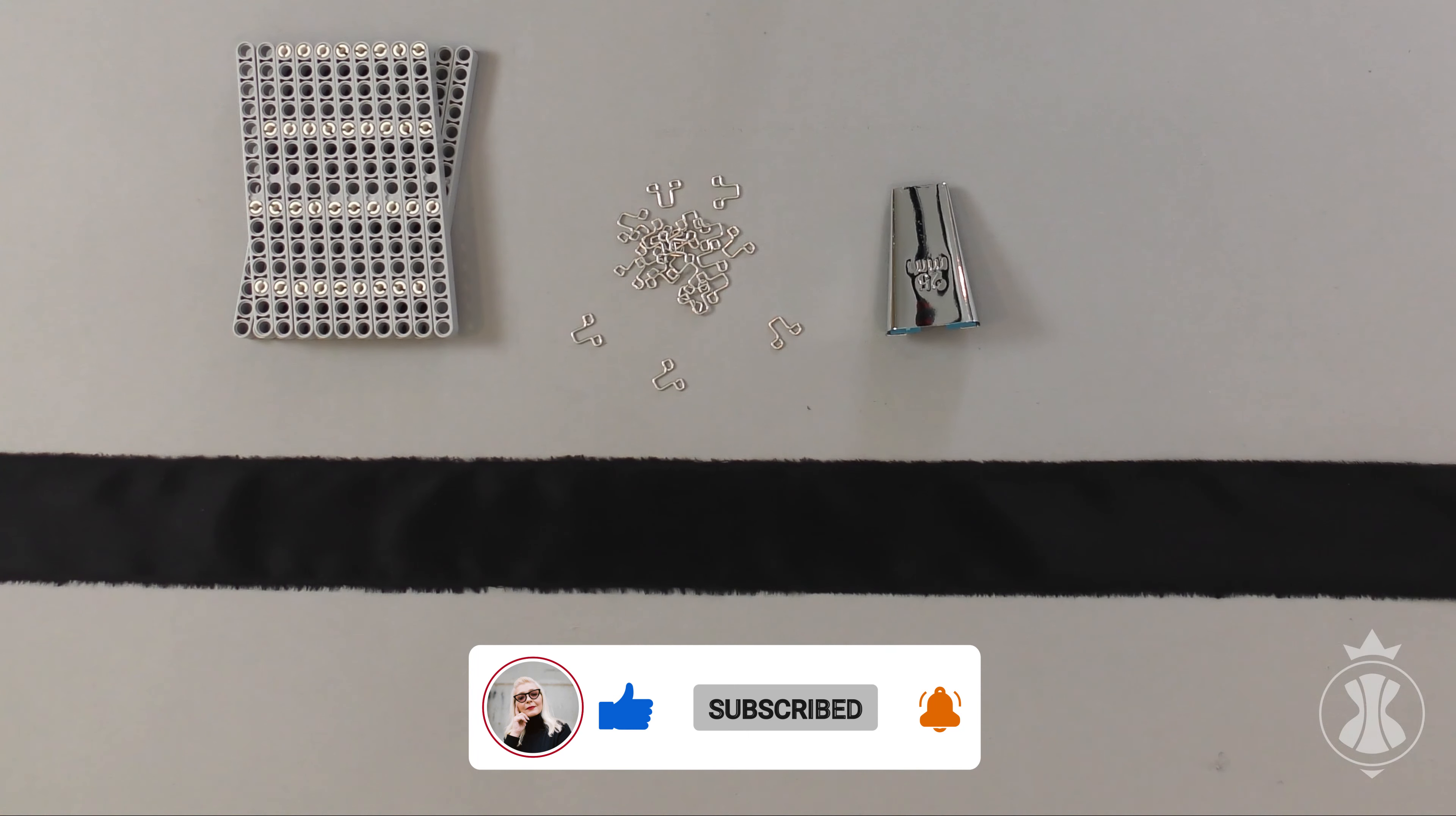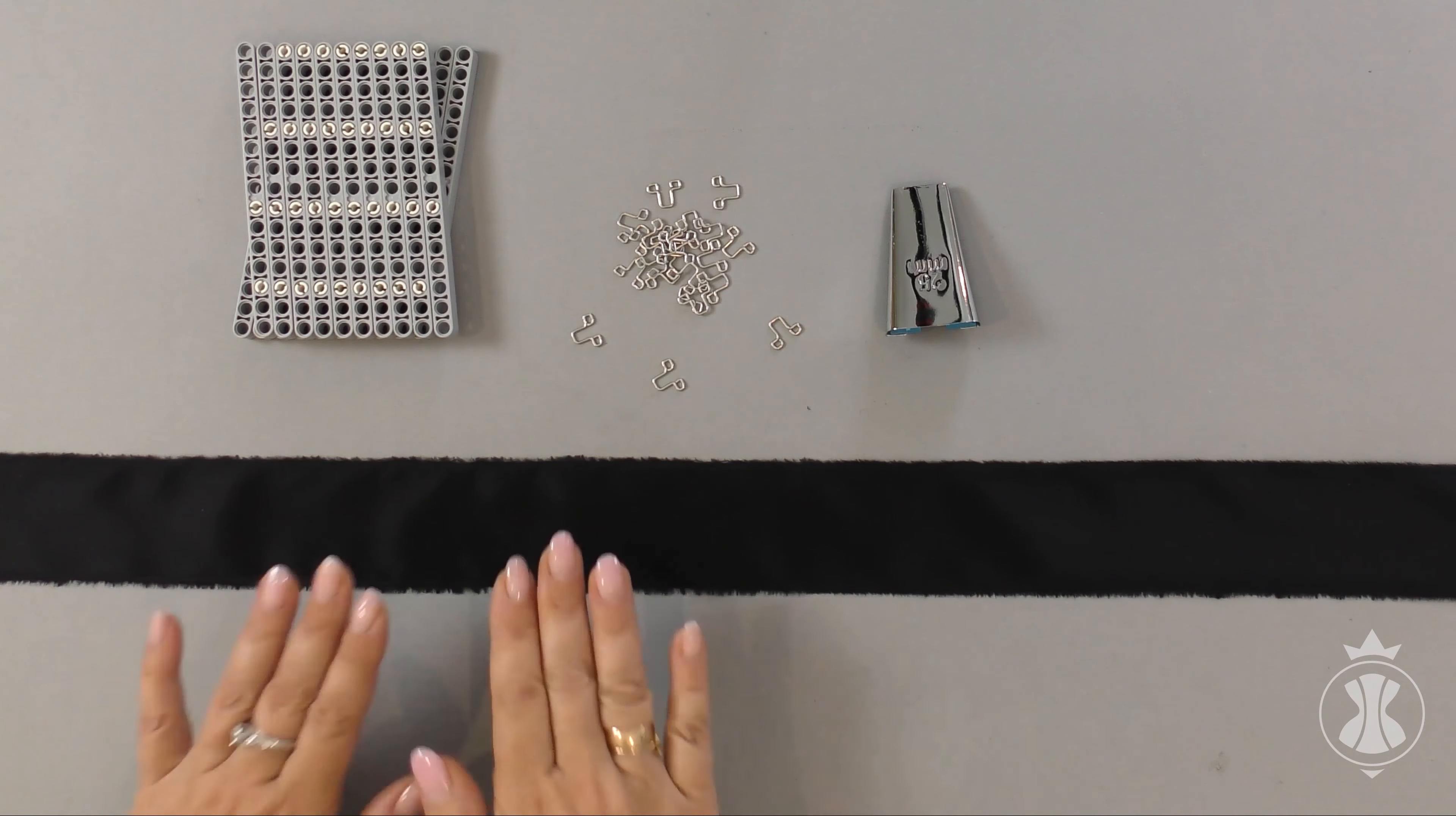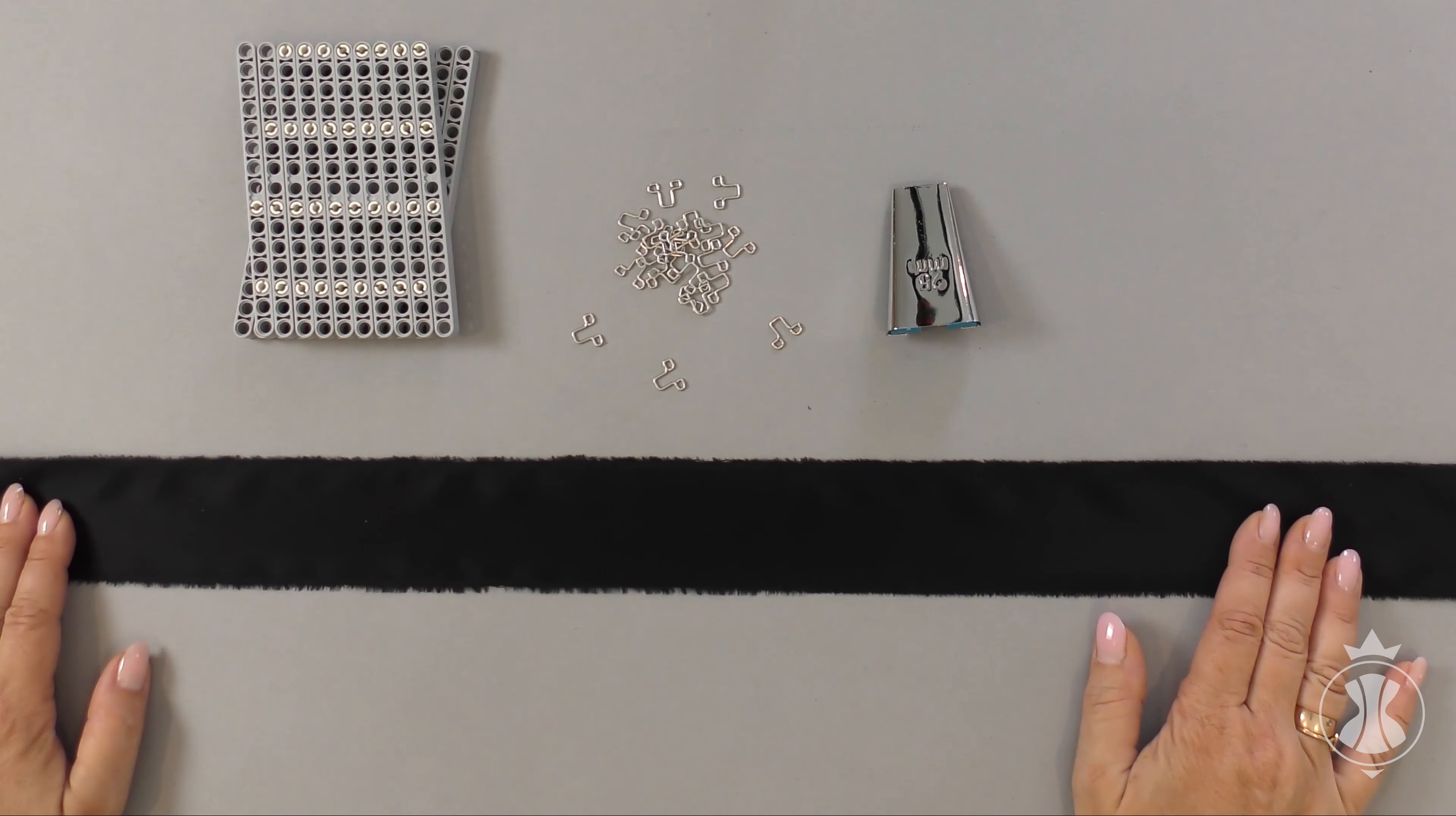You will need fabric of the desired color for a tape. You cut a strip of necessary length on the straight line, lengthwise grain or crosswise grain. The width of the strip is 5 cm.